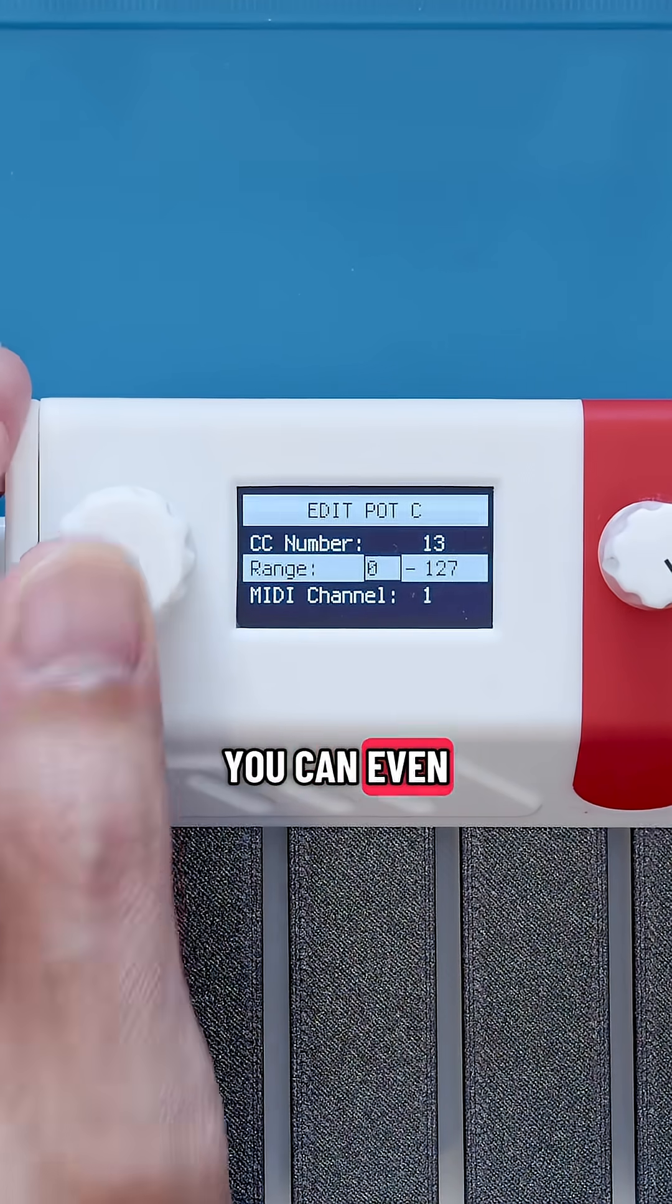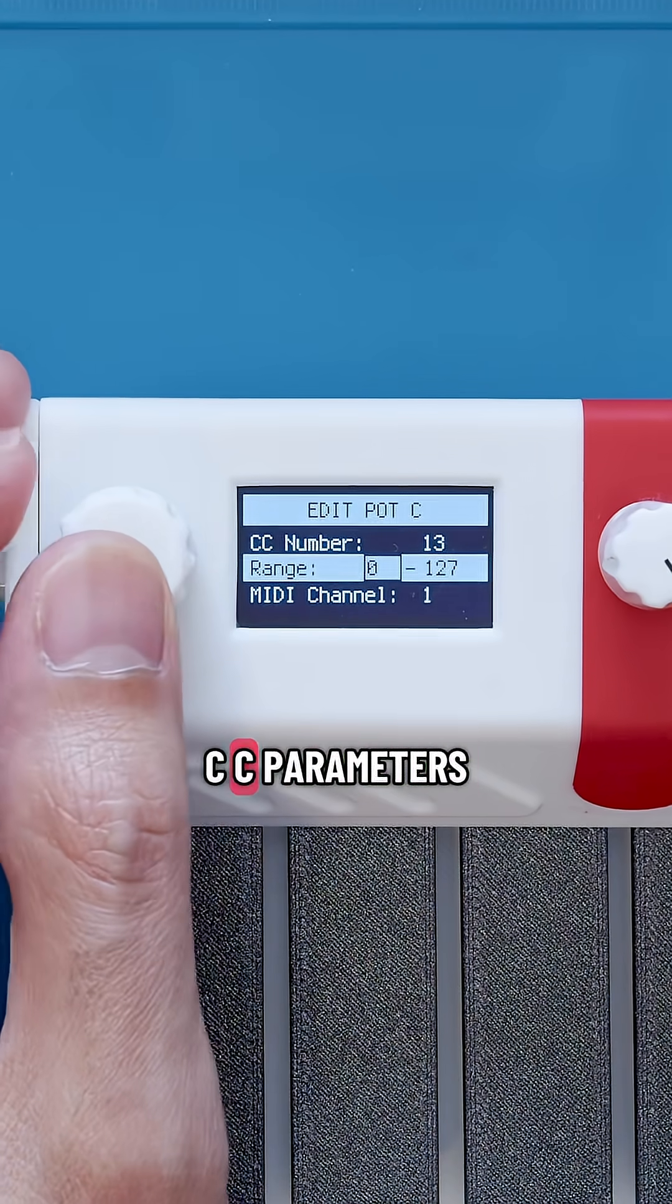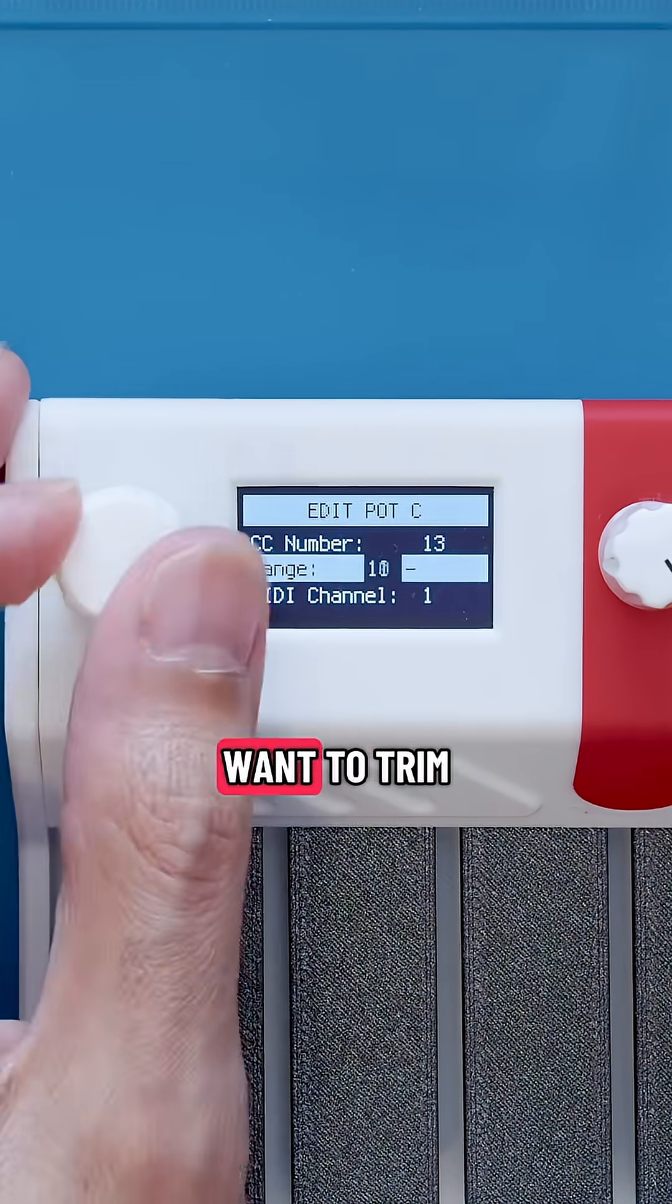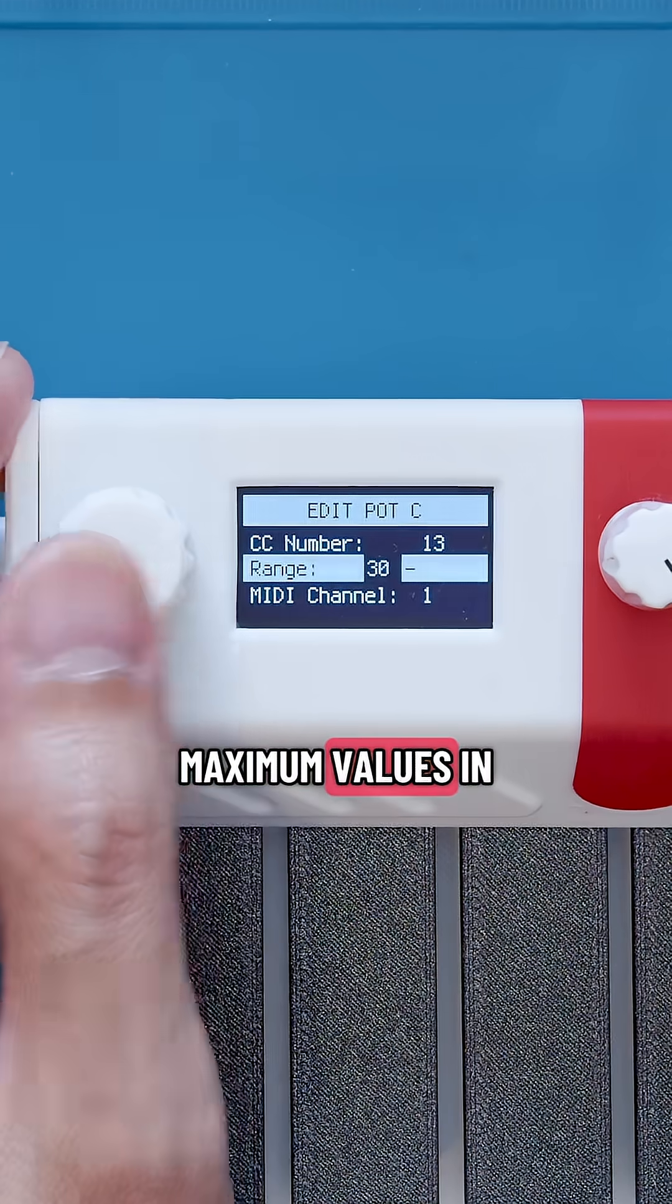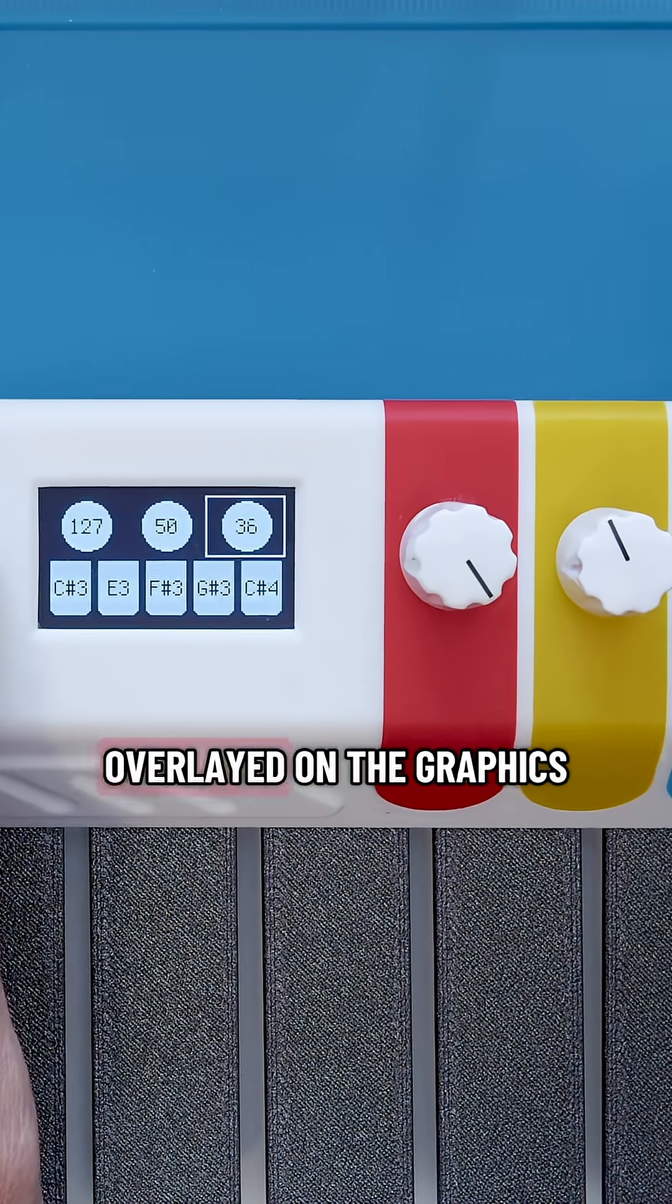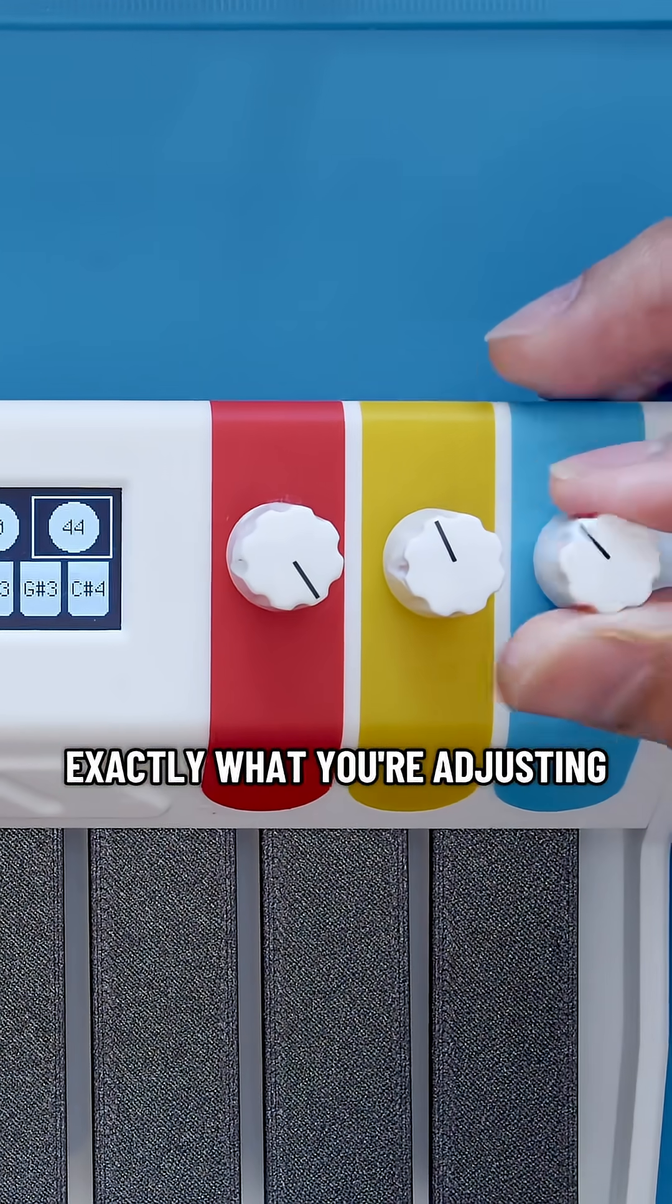When editing potentiometers, you can even adjust the range of the MIDI CC parameters. This is great if you want to trim the minimum or maximum values. In the main menu, the values are overlaid on the graphics so you know exactly what you're adjusting.